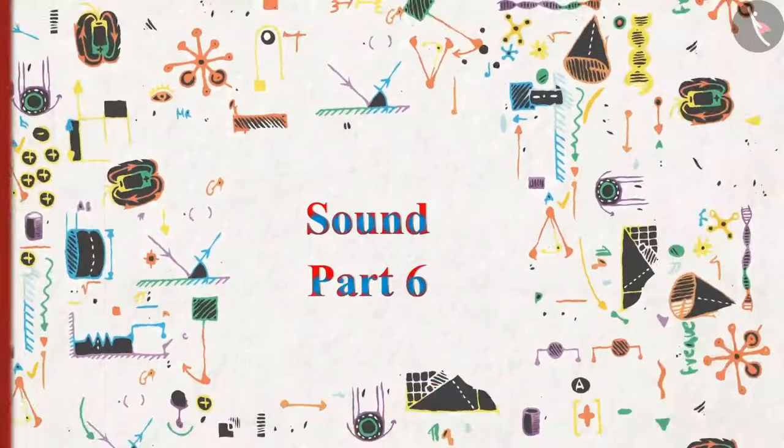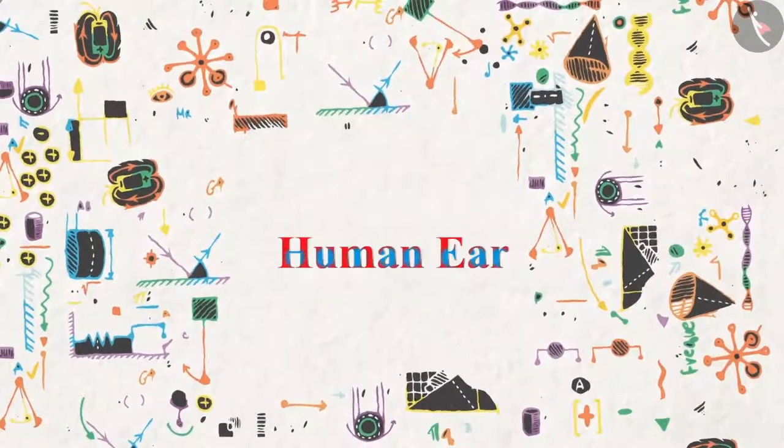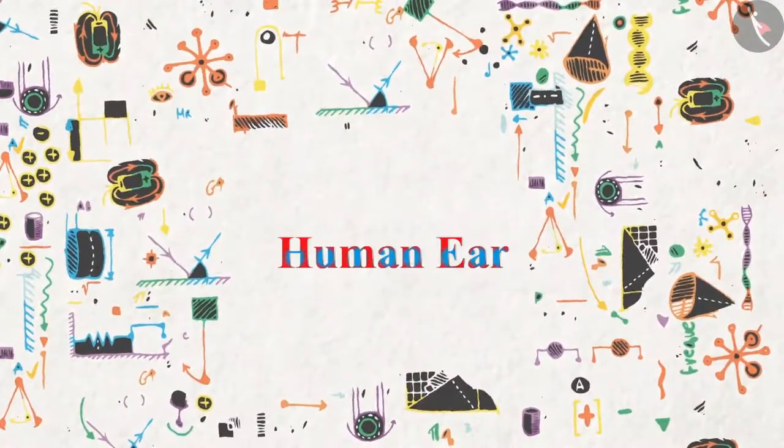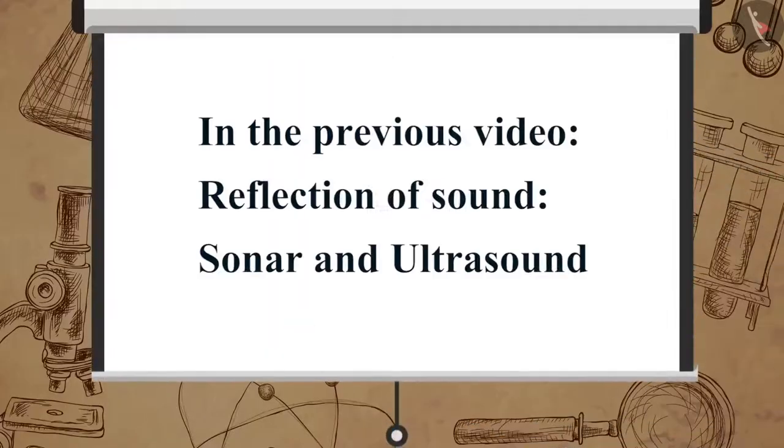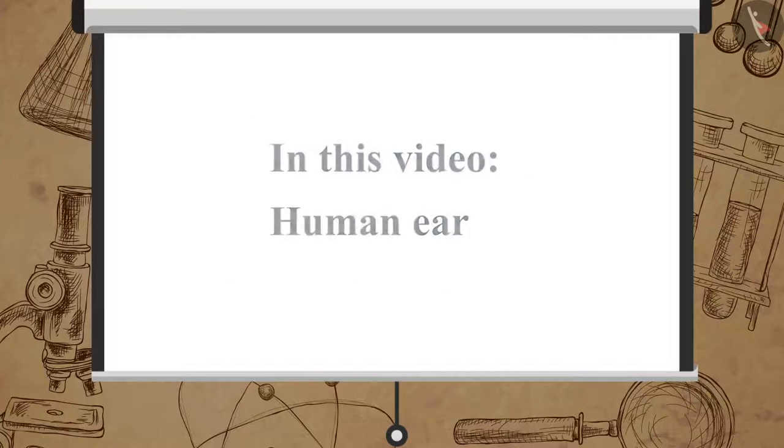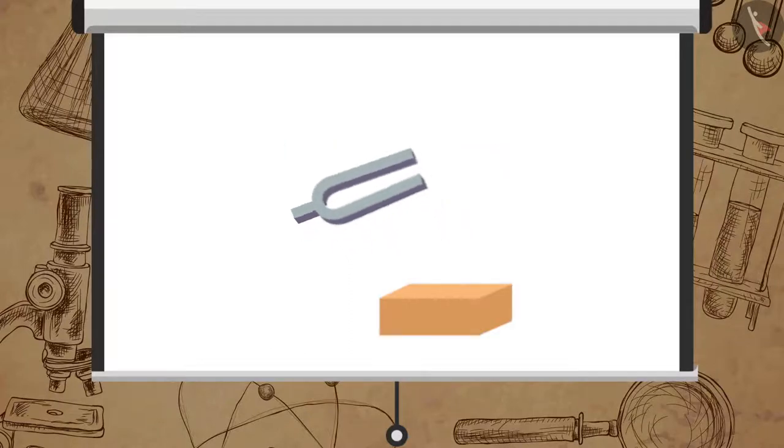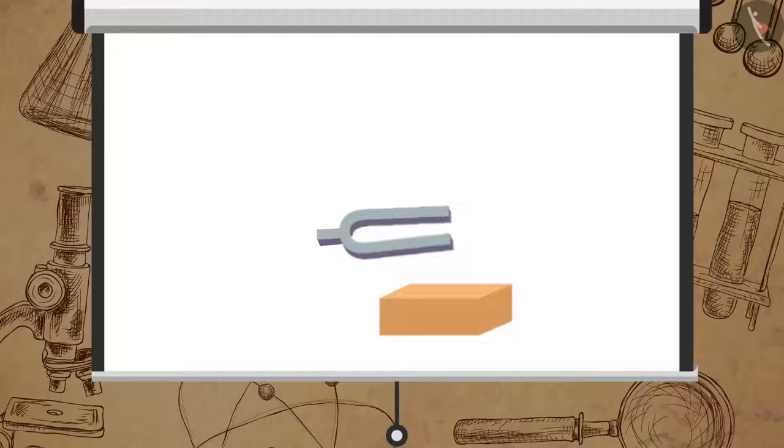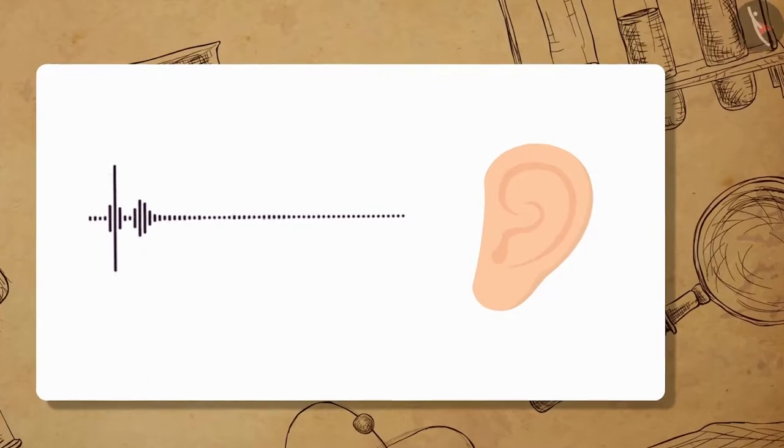Sound Part 6: Human Ear. In the previous video we learned about sonar and ultrasound. In this video we will learn about the human ear. Earlier we studied how sound is produced, now let us learn how we hear the sound.